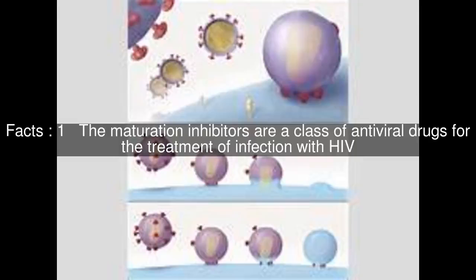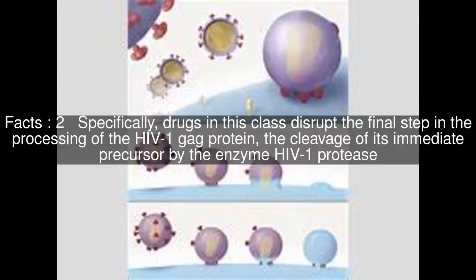The maturation inhibitors are a class of antiviral drugs for the treatment of infection with HIV. Specifically, drugs in this class disrupt the final step in the processing of the HIV-1 GAG protein, the cleavage of its immediate precursor by the enzyme HIV-1 protease.